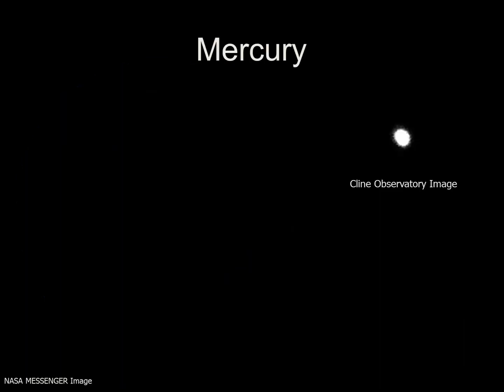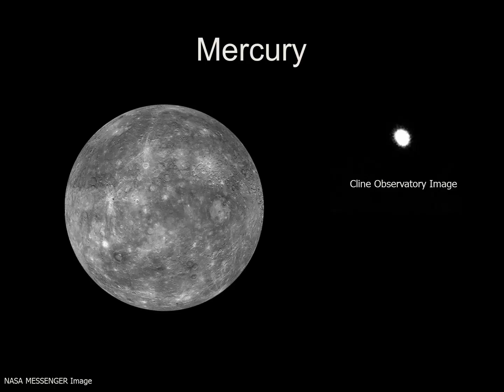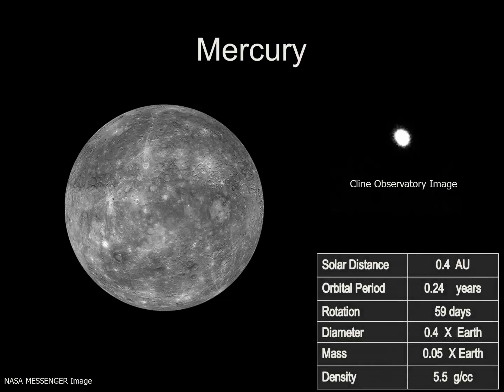Here's planet Mercury viewed from the telescope at the Klein Observatory. It's often difficult to see Mercury in a telescope because Mercury is never far from the Sun. We have sent spacecrafts out to visit Mercury. Here's a map that was created by NASA's Messenger space probe that orbited Mercury. A few of the details about Mercury: it orbits the Sun at 0.4 astronomical units. It takes 0.24 years, or 88 days, to make one trip around the Sun.